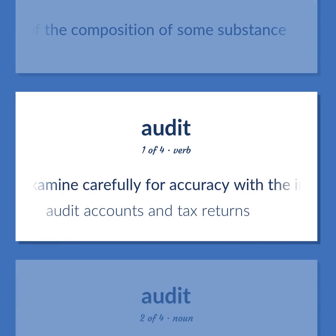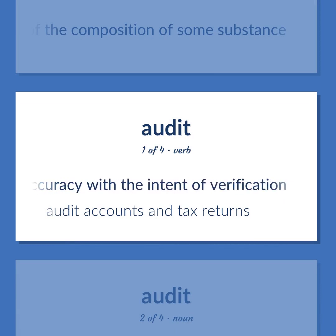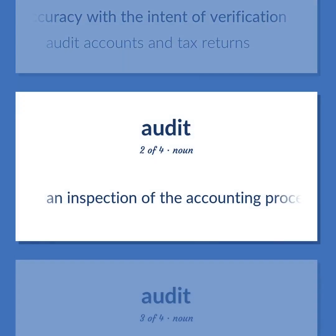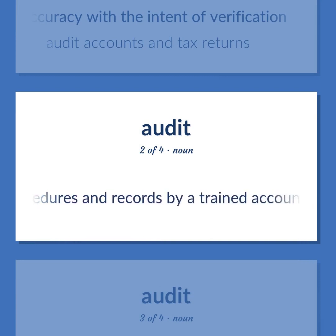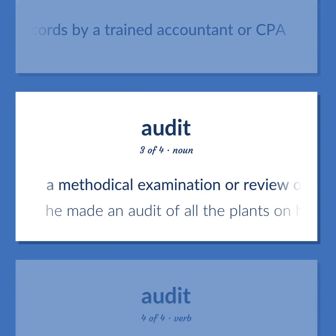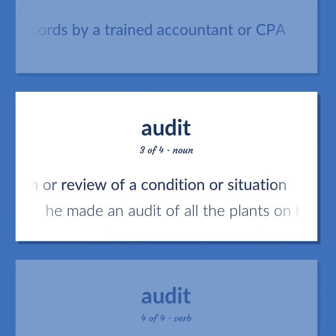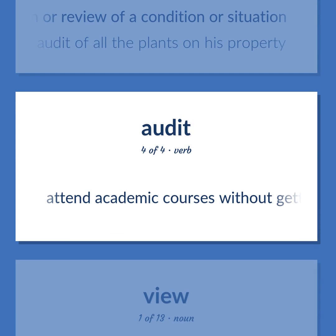Audit. Examine carefully for accuracy with the intent of verification. Audit accounts and tax returns. An inspection of the accounting procedures and records by a trained accountant or CPA. A methodical examination or review of a condition or situation. He made an audit of all the plants on his property. Attend academic courses without getting credit.